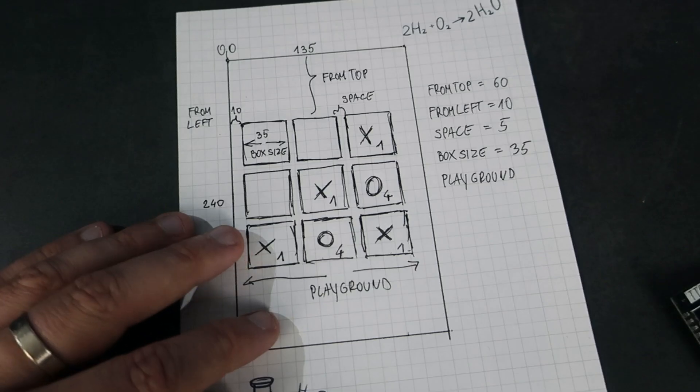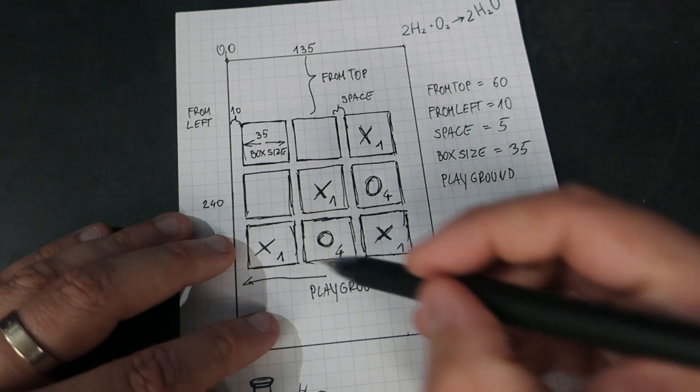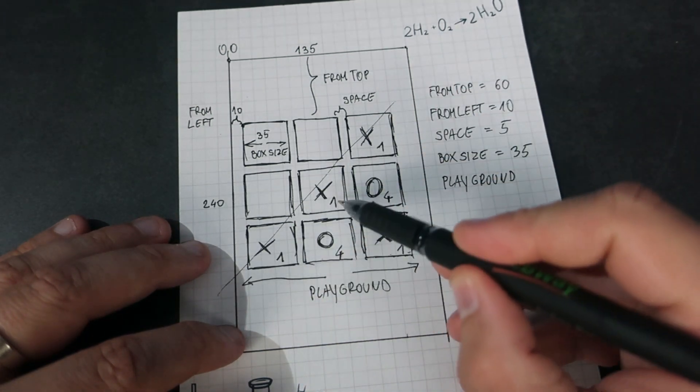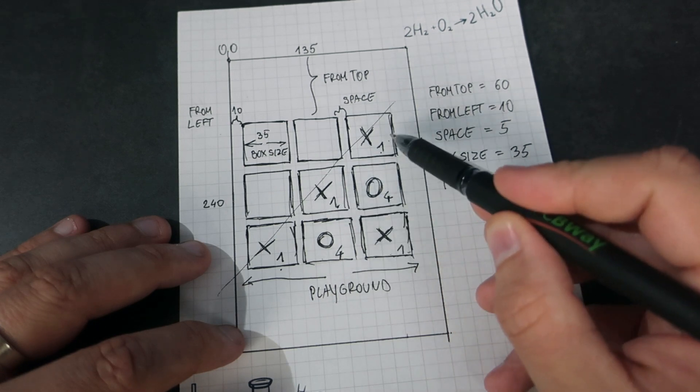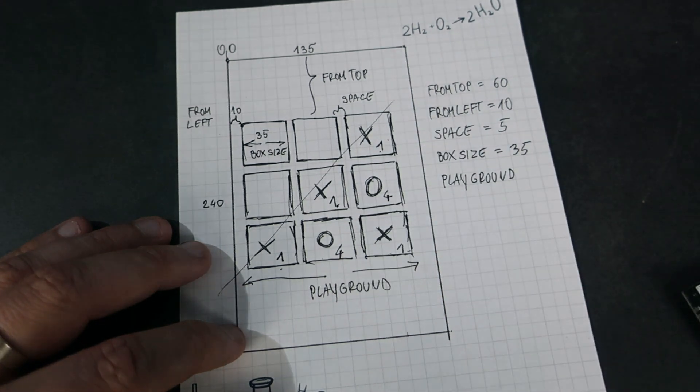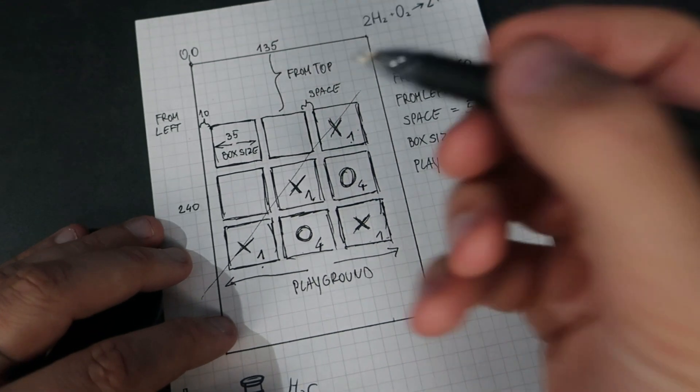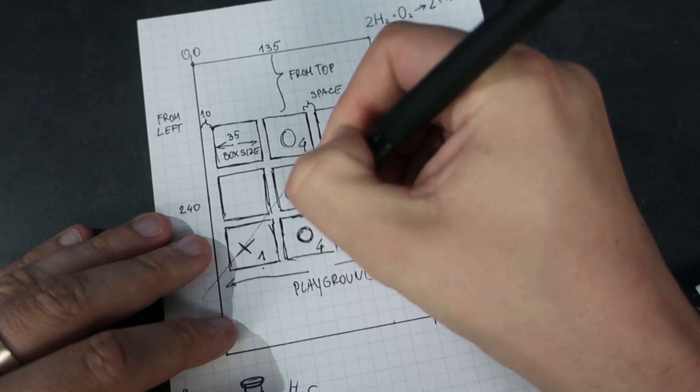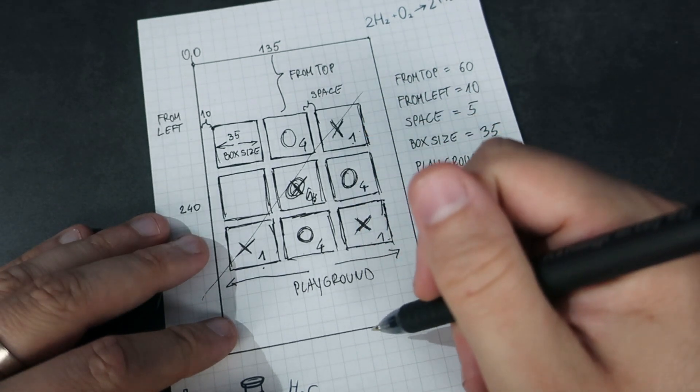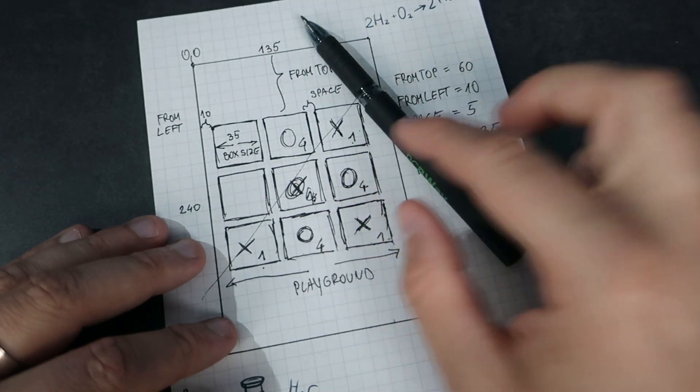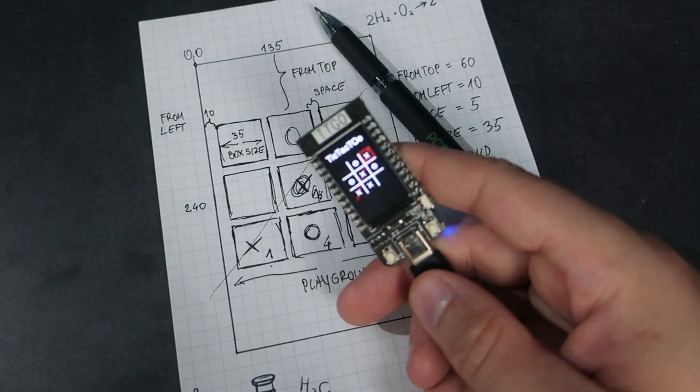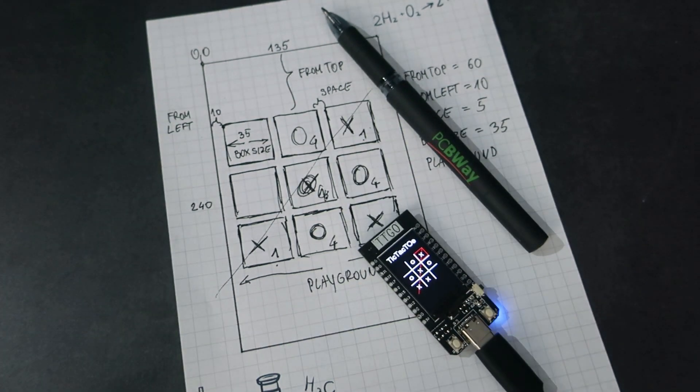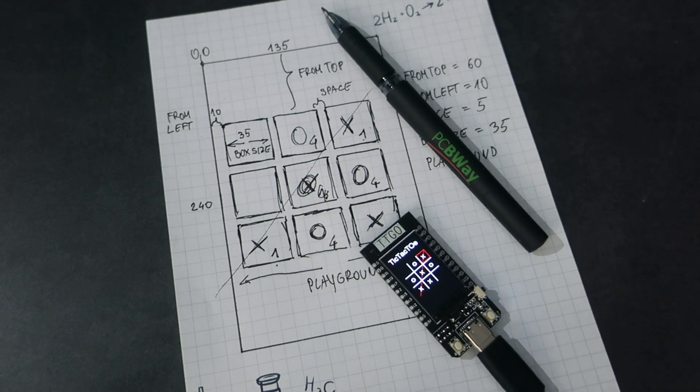The function will check all lines, and if the sum of all boxes in a line is 3, for example 1 plus 1 plus 1, it will know that the winner is player 0. But if the sum is 4 plus 4 plus 4, if the sum is 12, the winner is player 1. I hope you understand that. I can't explain it much better, but English is still a big problem for me. This can be done in many ways. I chose this way. I'm looking forward to seeing your way.